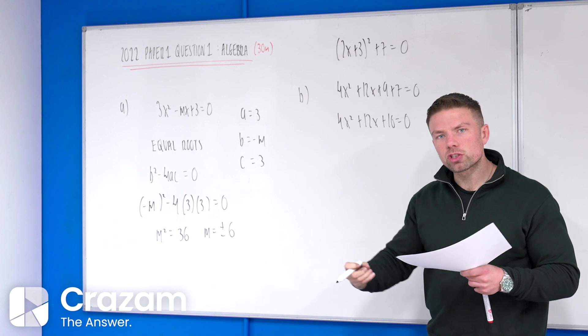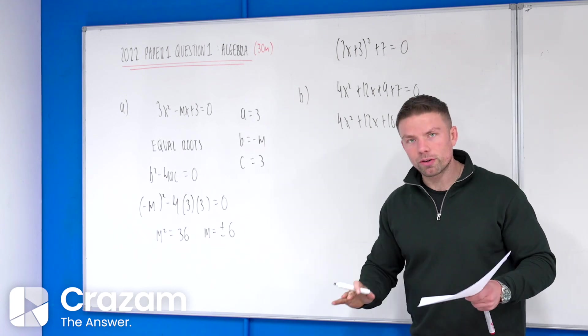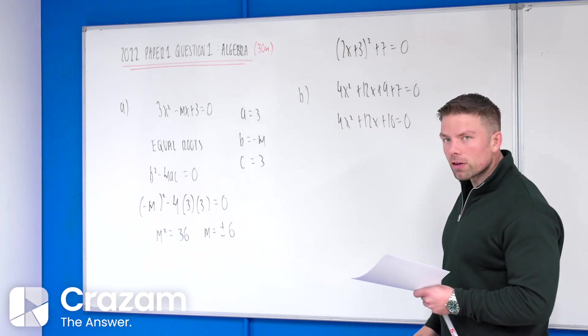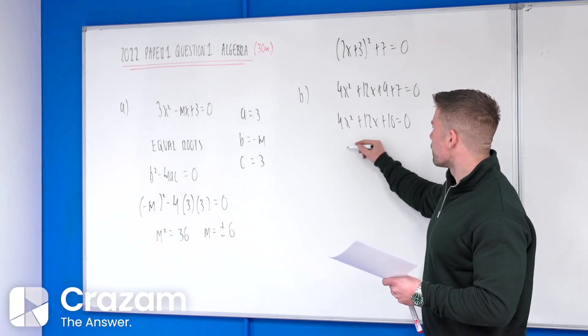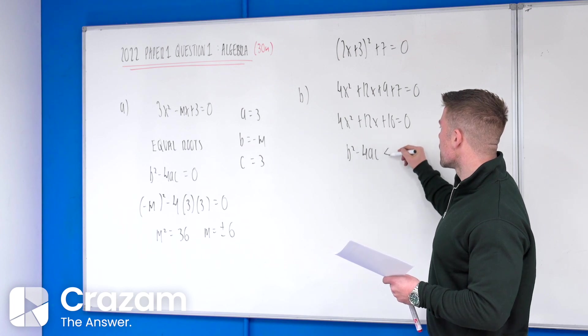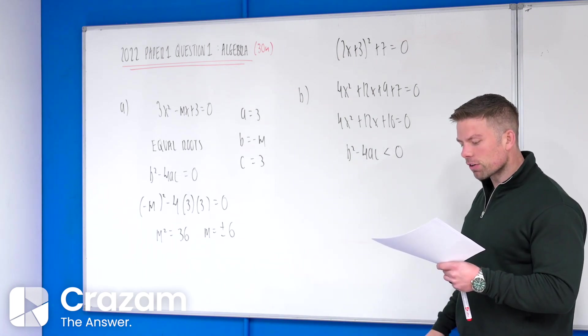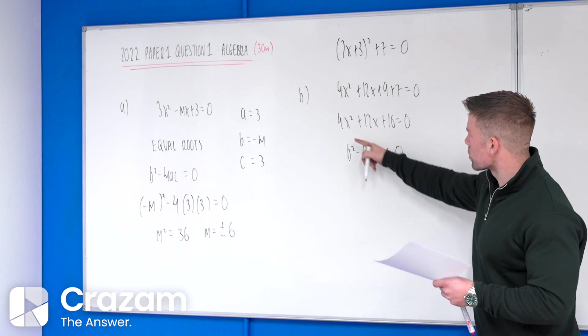Now, having no real solutions doesn't mean you have to go and solve it here. I'm going to latch on to this. If we are talking about no real solutions, this will be the discriminant, B squared minus 4ac, being less than 0. So if I can prove that's less than 0, then we have no real solutions.